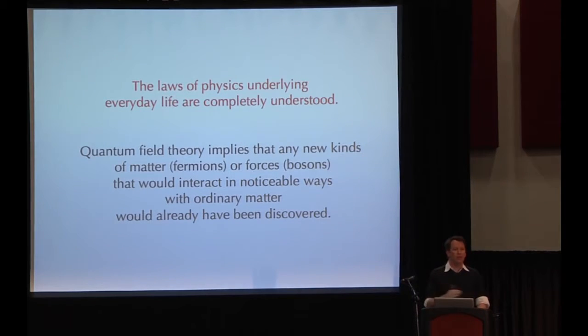The laws of physics underlying everyday life are completely understood. And the reason why I emphasize this is because scientists, and skeptics for that matter, love to go right to the unknown things. There are many, many things that are unknown, from dark matter to quantum gravity to finance. But there are also things that are known. And among the things that are known are how the matter around us in our everyday life actually works. And it's not just we have a theory that works, it's better than that. We know that there are no new parts of nature that we haven't found yet that could exert a substantial influence over our everyday lives. There are no new particles or forces that could be relevant to your everyday life that science hasn't found yet. And that's a much more dramatic claim that I'm going to try to justify just a little bit.